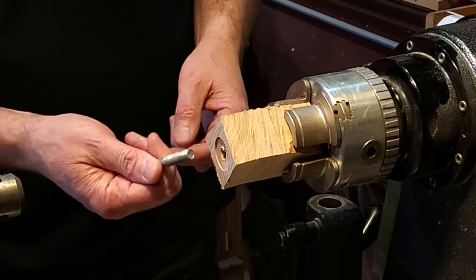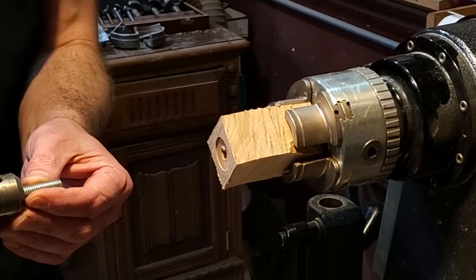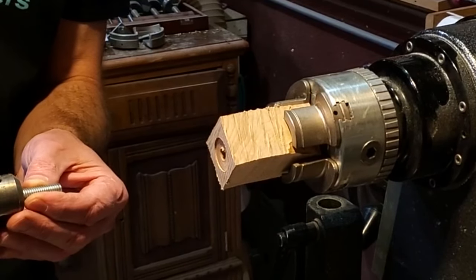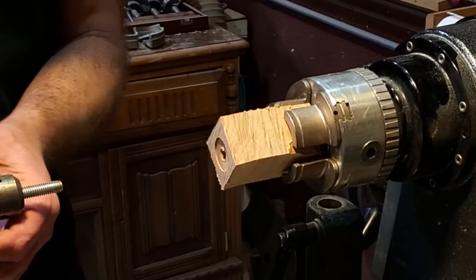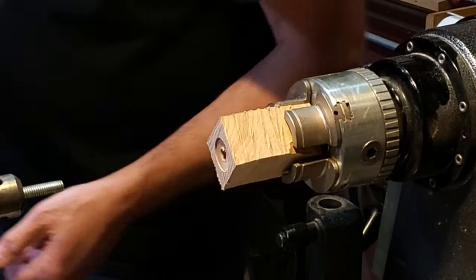I have a 3/8 inch bolt here I just cut off. Keith suggested putting it into the Jacobs chuck. Going the wrong way, I think. There we go, just like that. Tighten it on there, and then you take your insert.